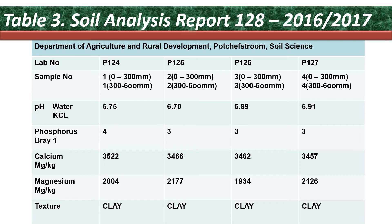Table three shows the soil analysis report number 128. Soil samples were taken in the year 2016–2017, and we formulated a sampling interval of about three years in order to detect any significant changes. The soil analysis report includes lab numbers, six sample numbers, pH, phosphorous spray-1 — which were found to be too low — calcium, magnesium, and texture.